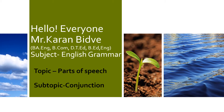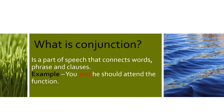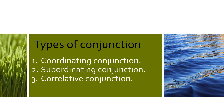Let's start with what is conjunction. Conjunction is a part of speech that connects words, phrases, and clauses. For example, 'you and he should attend the function.' Here 'and' is the word that connects both parts of the sentence, so this is an example of conjunction.